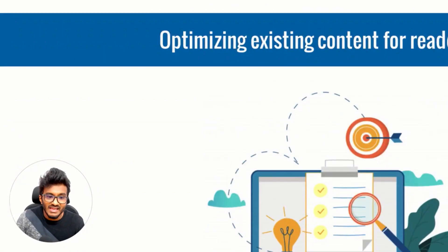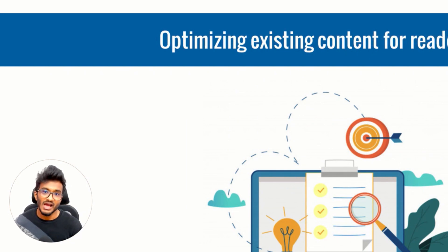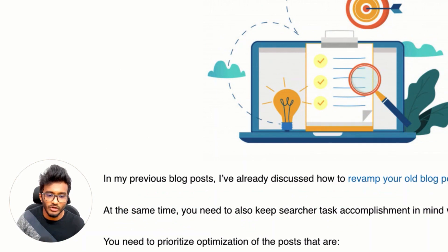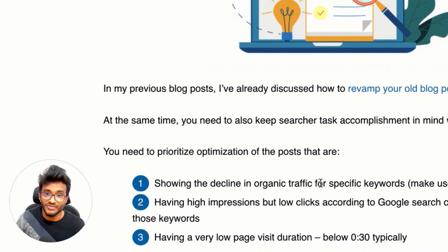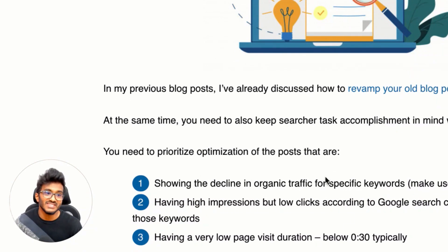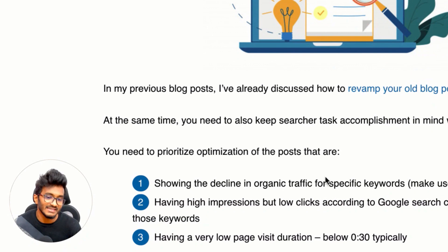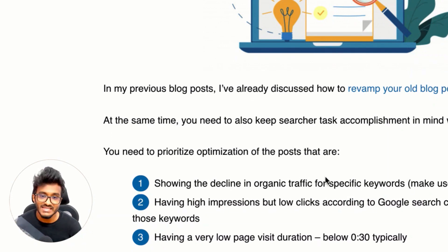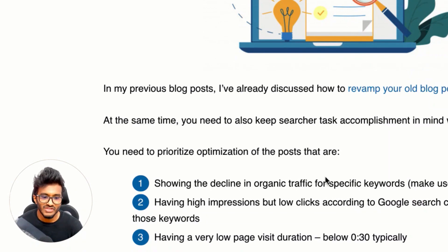If you have existing content, you need to prioritize optimization of posts that have declined in organic traffic for specific keywords. A traffic decline for a specific keyword means the searcher task is not being accomplished. Reconsider your content and optimize it for keywords where rankings are declining. I highly suggest using good rank trackers — you can use SEO Pulse with a rank tracker, or AQ Ranker, which is what I use, a cloud-based rank tracking service.